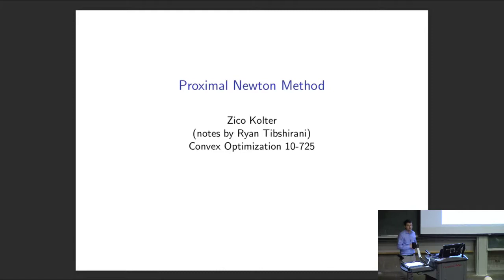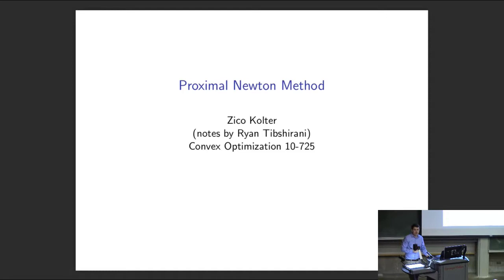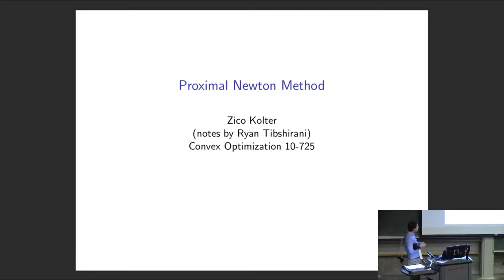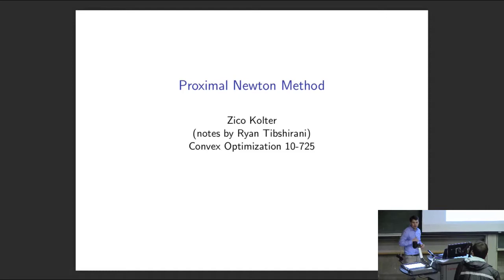Today we're going to talk about proximal Newton methods. We already talked about proximal gradient methods, which was a way of optimizing non-smooth functions with something that looked like gradient descent but had this extra prox operator involved. It ended up inheriting nice properties of gradient descent like linear convergence, despite having this non-smooth term. Today we're going to talk about the Newton equivalent — is there a second order version? And there is, it's called the proximal Newton method, but it does have some caveats.